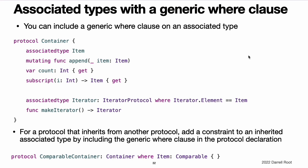Associated types with a generic where clause. You can include a generic where clause on an associated type. For example, suppose you want to make a version of container that includes an iterator, like what the sequence protocol uses in the standard library. The generic where clause on the iterator requires that the iterator must traverse over elements of the same item type as the container's items, regardless of the iterator's type. The makeIterator function provides access to the container's iterator. For a protocol that inherits from another protocol, you add a constraint to an inherited associated type by including the generic where clause in the protocol declaration. For example, this code declares a comparableContainer protocol that requires item to conform to comparable.